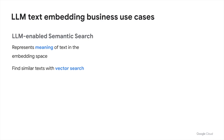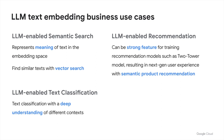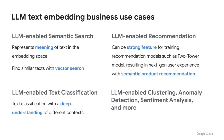Text embeddings can be used to represent the meaning of texts in the embedding space. Texts with similar meaning to the user's query intent will be found fast with vector search technology. LLM-enabled text classification can be used with a deep understanding of different contexts without any training or fine-tuning. LLM-enabled recommendation uses text embeddings as a strong feature for training recommendation models such as the Two-Tower model, resulting in next-gen user experience with semantic product recommendation. Clustering, anomaly detection, sentiment analysis, and more can also be handled with LLM-level deep semantics understanding.